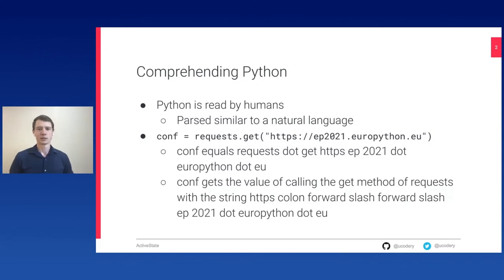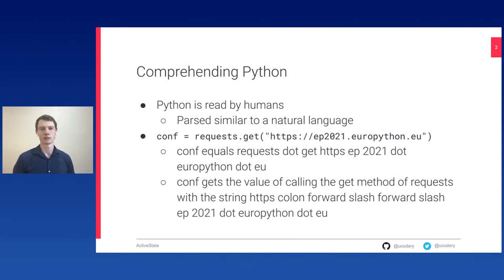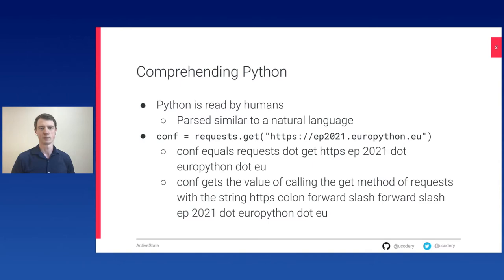Python is a language that has been designed since the very beginning to be very readable. It was observed that people spend more time reading their code than they do writing it, so it was desired to build a language that could be easily read. Humans read Python code and they parse it — they consume the information in a way that best fits their own head, and that can be different per person. Each of us might read a piece of Python code differently depending on the situation or our background.